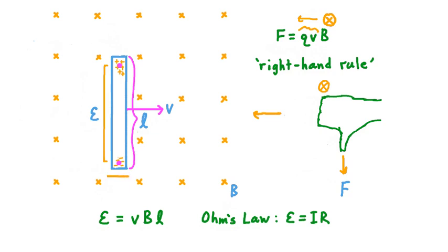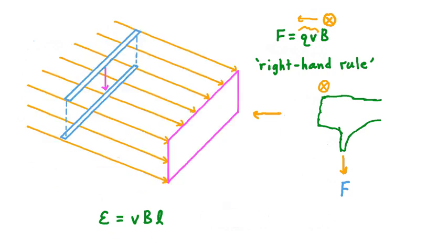This equation is technically a simplified version of a more general form, because the direction the conductor moves can have an effect on the EMF generated. Let's consider another sketch. If our magnetic field lines point in a certain direction and our conductor moves straight down, perpendicular to the direction of the magnetic field, then V and B are perpendicular to one another. In this case it's true that the EMF induced in the conductor equals V times B times the length of the conductor.